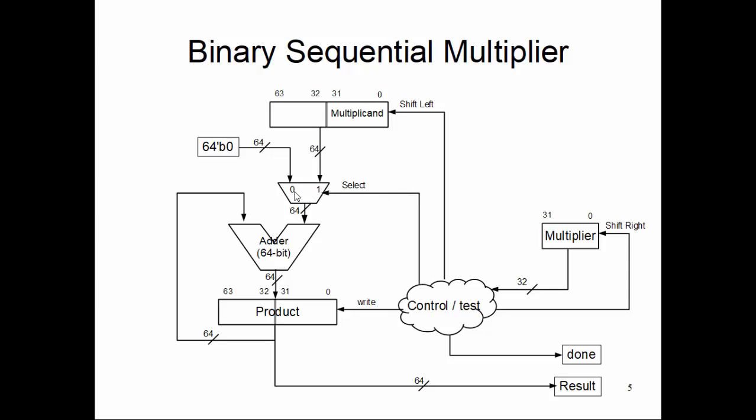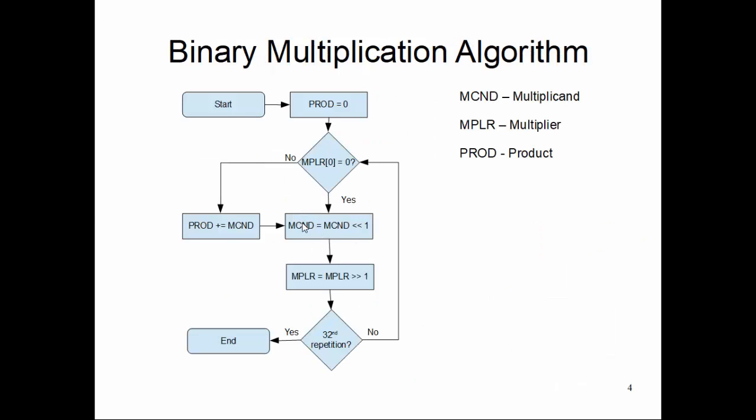The controller looks at the LSB of the multiplier and depending on that, issues a select signal - whether 1 or 0 - to select zero to be added onto the product or multiplicand to be selected to be added to the product to compute the partial sum.